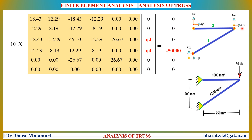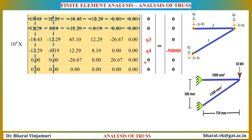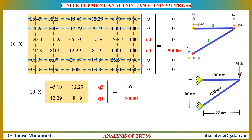We will use the elimination method to determine the unknowns. In this method, the corresponding row and column are eliminated for each displacement that is zero. Row 1 and column 1 are eliminated, then row 2 and column 2, then rows and columns 5 and 6. This gives the reduced matrix. By solving this reduced matrix, we determine the values of Q3 and Q4.